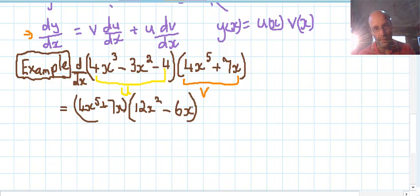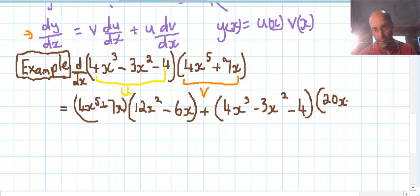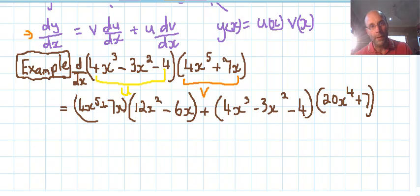Then plus the first of the two functions, and the derivative of the second one, which will be 20x to the power 4 plus 7. Now often that's fine, that answer just like that. Sometimes you need to expand that out as a big long polynomial and simplify and add and subtract like terms. It depends on the situation, but if it's not important to do that, just leave it in that factorized form.